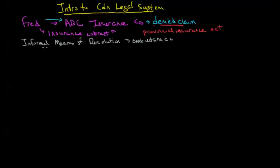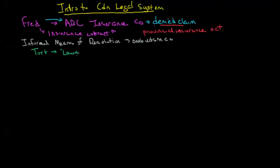So now what Fred might do is pursue a tort. A tort refers to harm caused to Fred's wealth, property, person, or dignity — in this case, harm caused to his wealth. A tort is simply a fancy way of saying a lawsuit; the word tort comes from the French literally meaning harm. This still might result in an informal resolution — it's actually quite common today, owing especially to the costs associated with going to court, to make an out-of-court settlement.